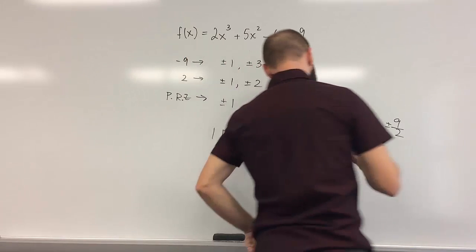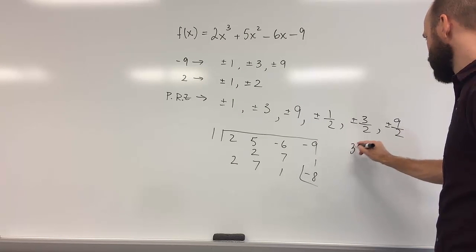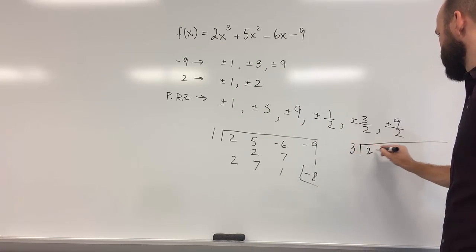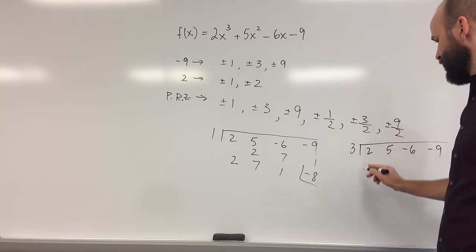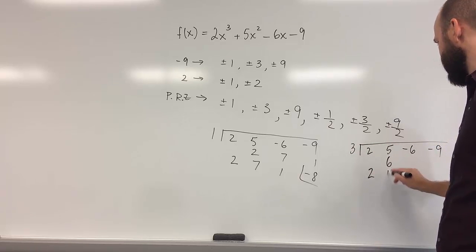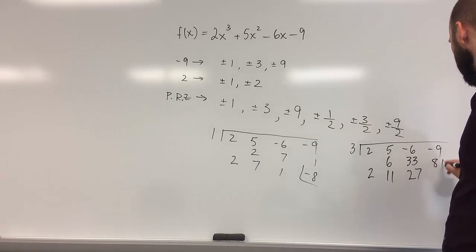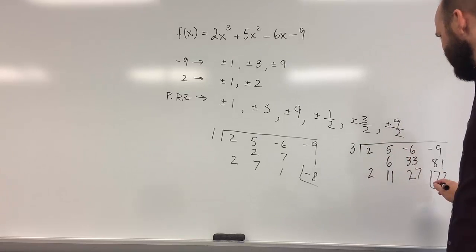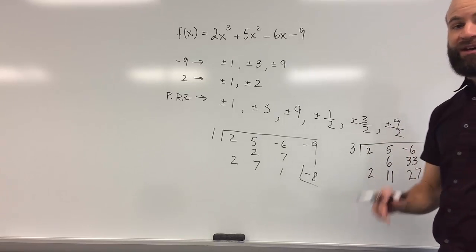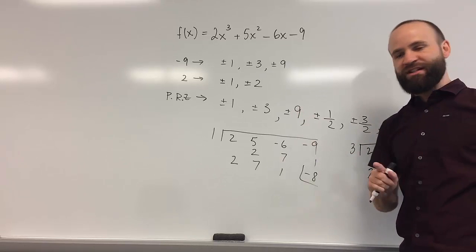The next one we might try is 3. If I try 3 using synthetic division: 2, 6, 11, 33, 27, 81, 72 — which means f of 3 is 72. So 3 is also not a zero for this function.